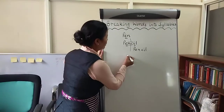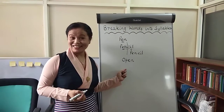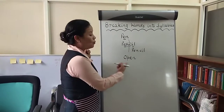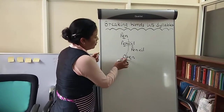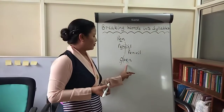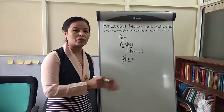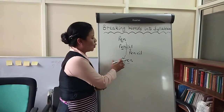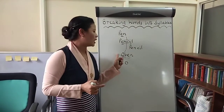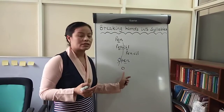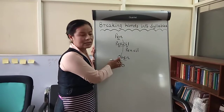Now let's take another word: 'open.' How many syllables are there? Two. We underline the vowels O and E, but we just have one letter in between. Usually when there is one letter between the two vowels, we split the word on the side of the first vowel sound. So we get O-pen. You'll notice that 'O' is an open syllable, because we don't have a consonant closing it, while 'pen' is a closed syllable. So 'open' is an example of both: an open syllable and a closed syllable.